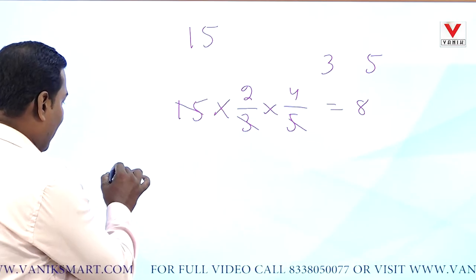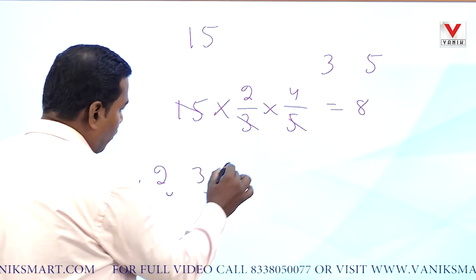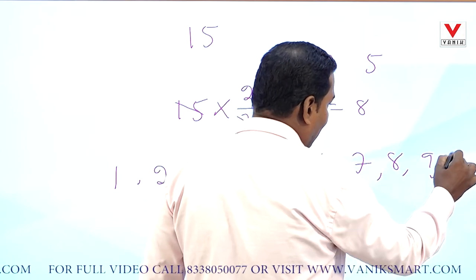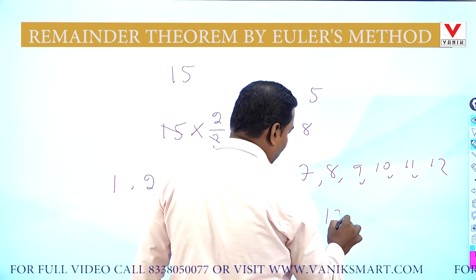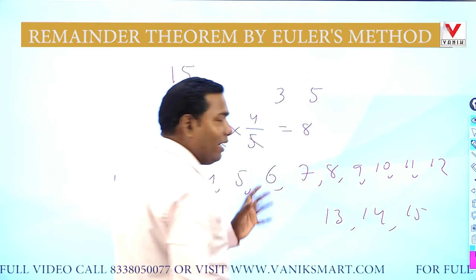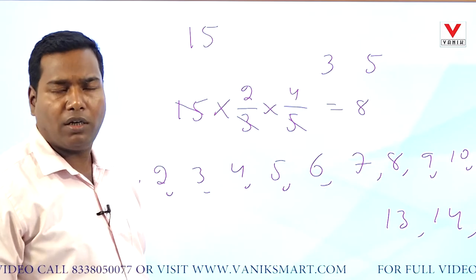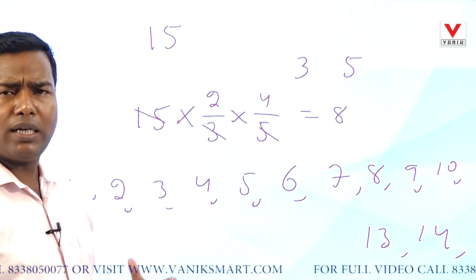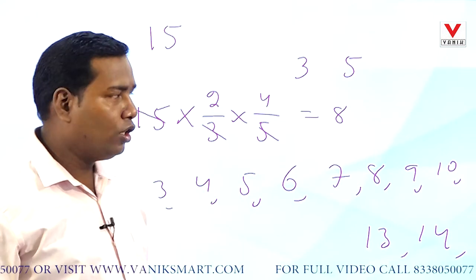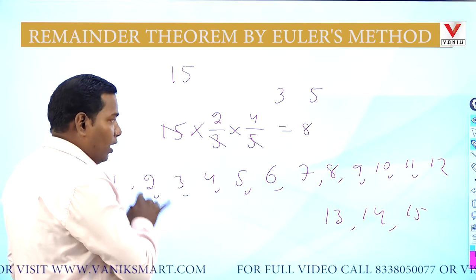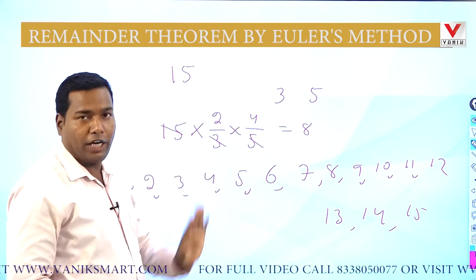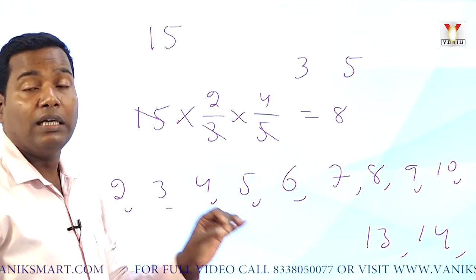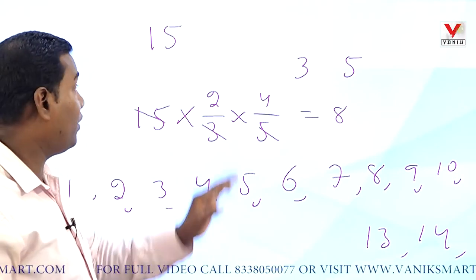When you write 1, 2, 3, 4, 5, 6, 7, 8, 9, 10, 11, 12, 13, 14, 15 — the Euler's number of 15 is 8. The numbers which are not divisible by 3 and 5, from 1 to 15, are counted as the Euler's number of 15.